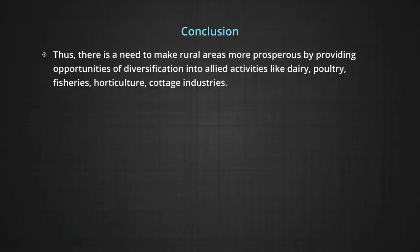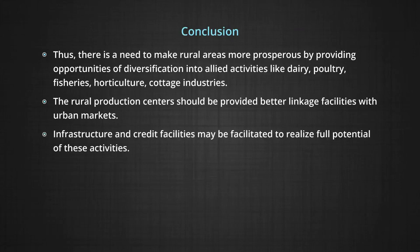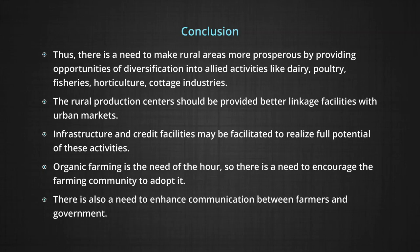Finally, let us conclude and summarize. There is a need to make rural areas more prosperous by providing opportunities of diversification into allied activities like dairy, poultry, fisheries, horticulture, and cottage industries. Rural production centers should be provided better linkage facilities with urban markets. Infrastructure and credit facilities may be facilitated to realize the full potential of these activities. Organic farming is the need of the hour, so there is a need to encourage the farming community to adopt it. There is also a need to enhance communication between farmers and government.